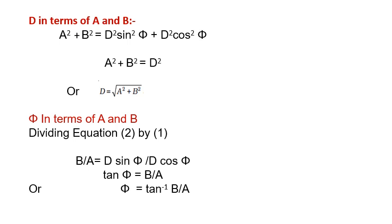Now phi in terms of A and B. On dividing equation 2 by 1, you will get B by A equals D sin phi divided by D cos phi. The D will be cancelled out and tan phi will equal B by A. Or you can say that phi equals tan inverse B by A. So you can calculate D and the phase angle phi by using these equations.